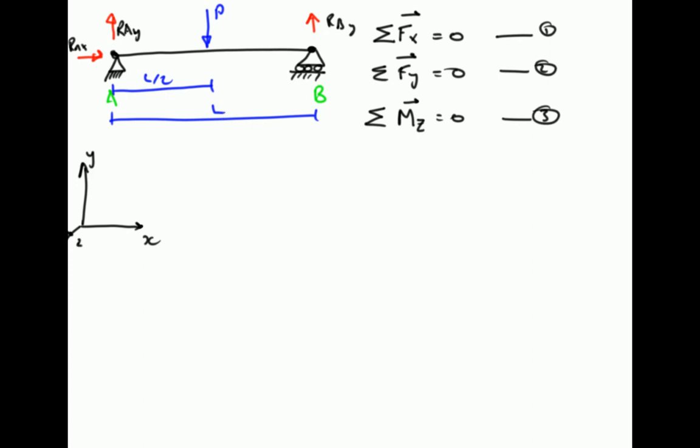From our three equations of static equilibrium, we can solve for the three unknown forces. P is a known force, these reactions are currently unknown. Using equation 1, R_Ax is the only force acting horizontally, so that must equal 0 to satisfy the sum of all the horizontal loads. So we've already solved for our first unknown reaction, and we now know that this horizontal reaction must be 0.